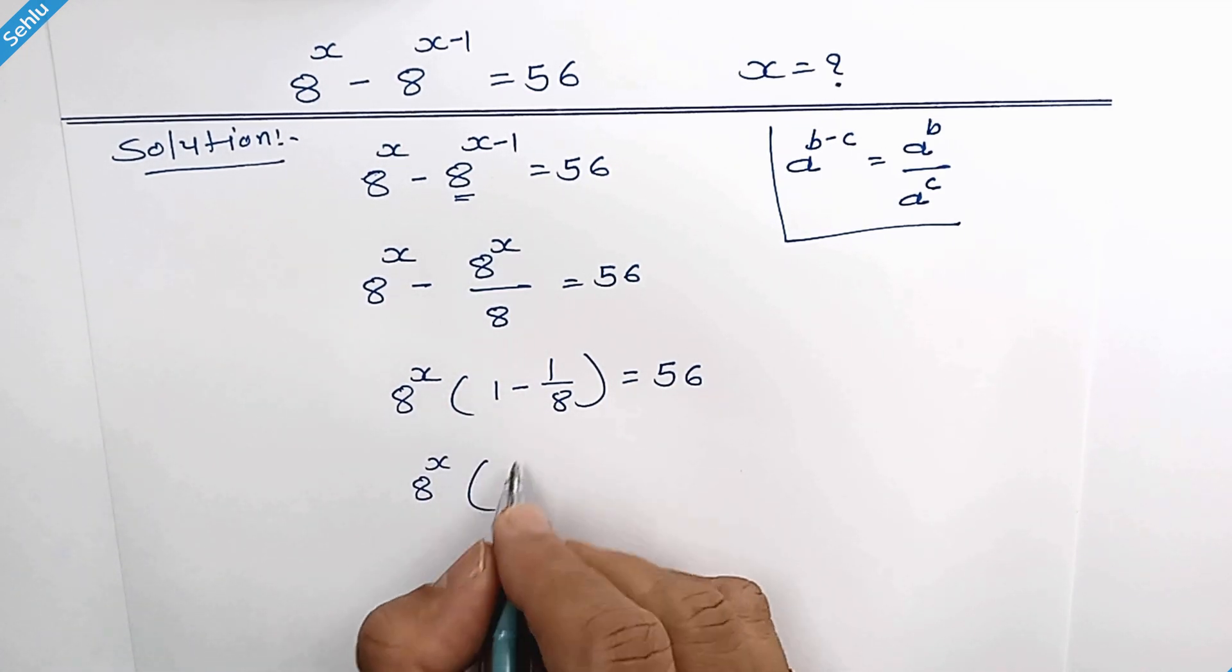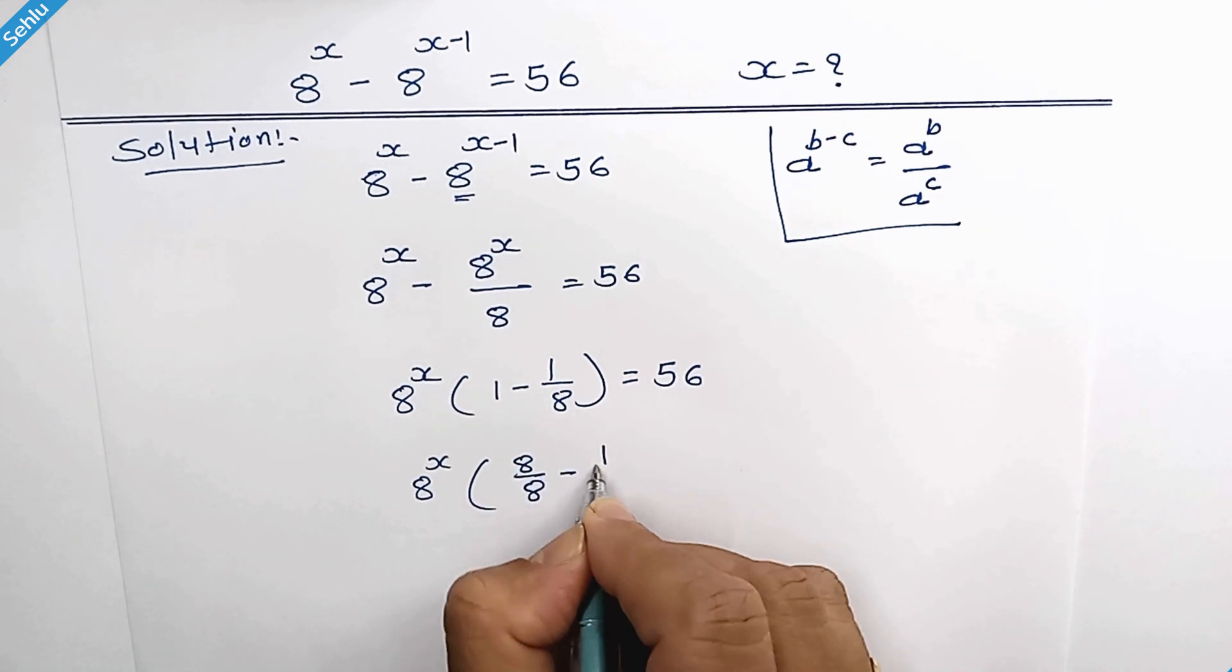We will take LCM here. So it will be 8 over 8 minus 1 over 8.